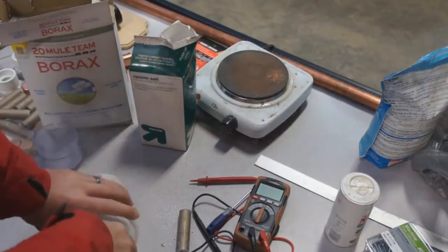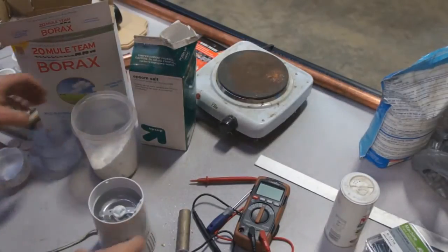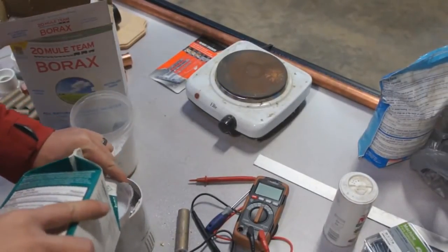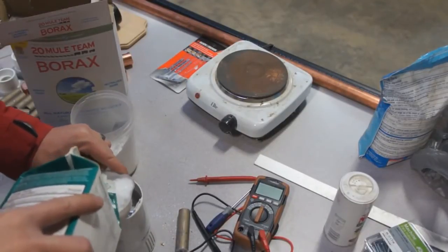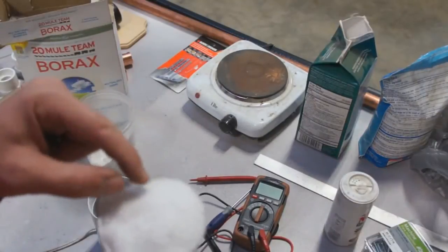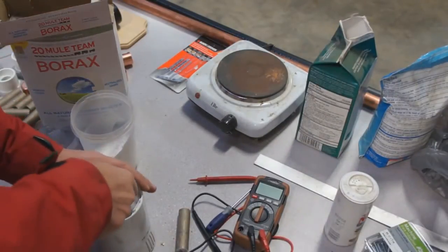And that will leave the last ingredient, which is the epsom salt, and we'll get that in here. So half a cup epsom salt. You can see this stuff is really granular, so we're going to have to blend this up a little more to get a good mix.